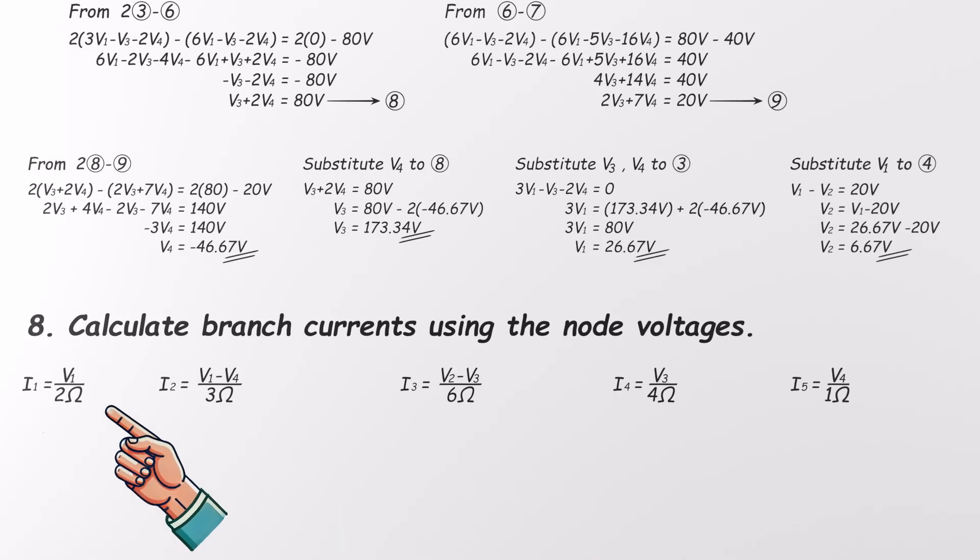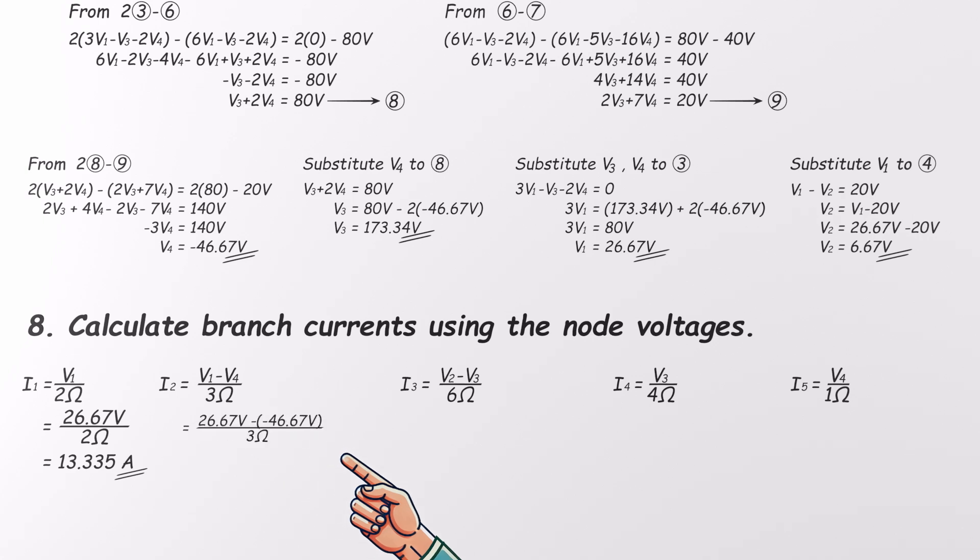Starting with I1, that's V1 divided by 2. So, 26.67 divided by 2 gives us 13.335 amps. Next, I2. V1 minus V4 divided by 3. So, 26.67 minus negative 46.67 over 3. That gives us 24.446 amps.